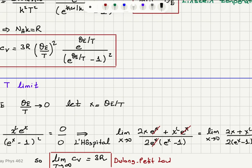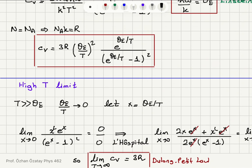At temperatures much greater than the Einstein temperature, θ_E/T → 0. Setting x = θ_E/T, Cv is proportional to x²·e^x/(e^x − 1)². Taking the limit as x → 0: the numerator gives 0 (from x²) and e^0 = 1, while the denominator gives (1−1)² = 0 — so we have 0/0, and I apply L'Hôpital's rule.